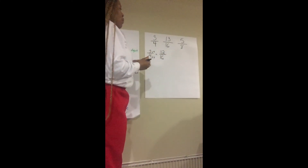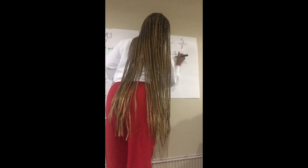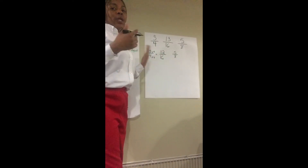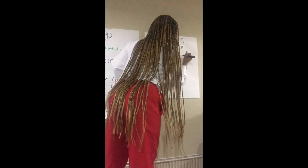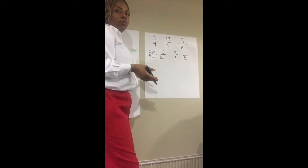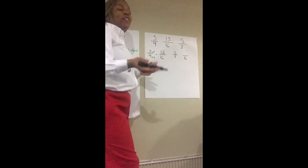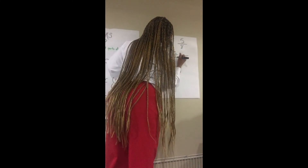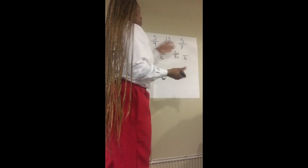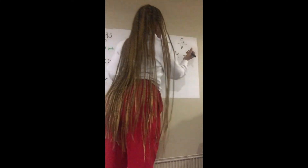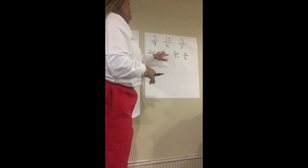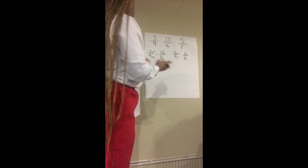Now let's move over to five eighths — I'm going to put it over here to the side. We know that we are going to a new denominator of sixteen, so I'm just going to put sixteen right over here. Eight times what gives us sixteen? Eight times two. Yes, eight times two gives us sixteen, so we know we're going to multiply our numerator and our denominator by two. Five times two is ten.